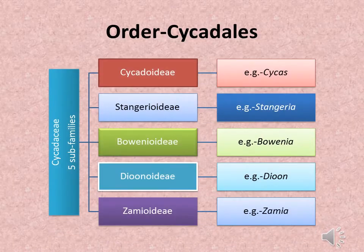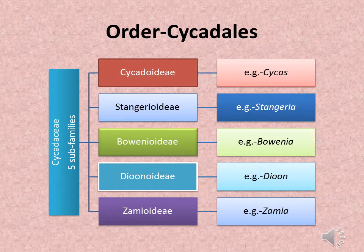Order Cycadeales has the family Cycadaceae, which is divided into 5 sub-families: Cycadoideae, Stangeroideae, Bowenioideae, Diooideae, and Zamioideae. Cycadoideae example is Cycas, Stangeroideae example is Stangeria, Bowenioideae example is Bowenia, Diooideae example is Dioon, and Zamioideae example is Zamia.